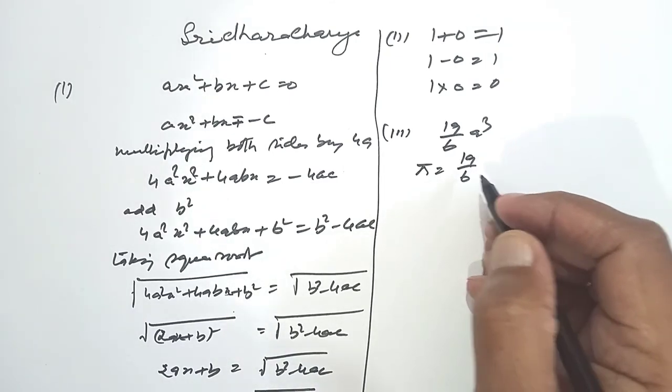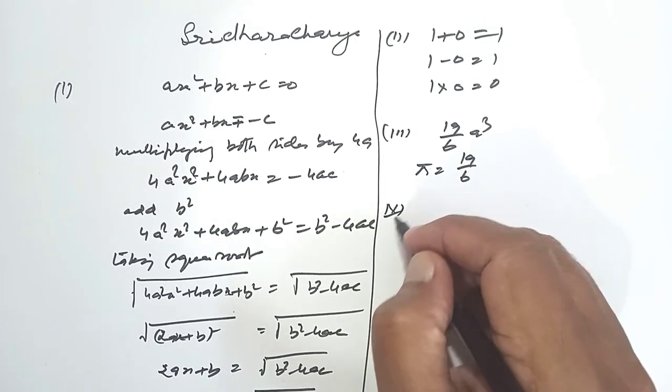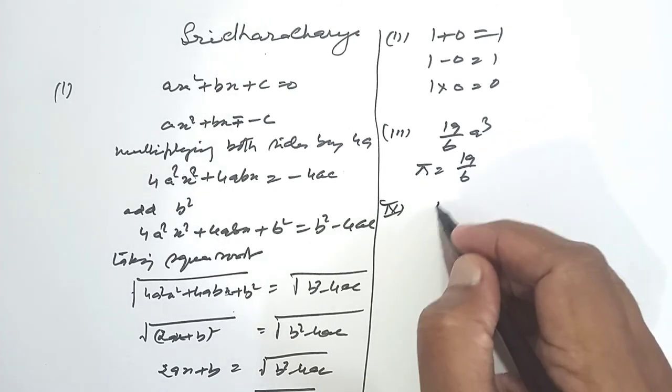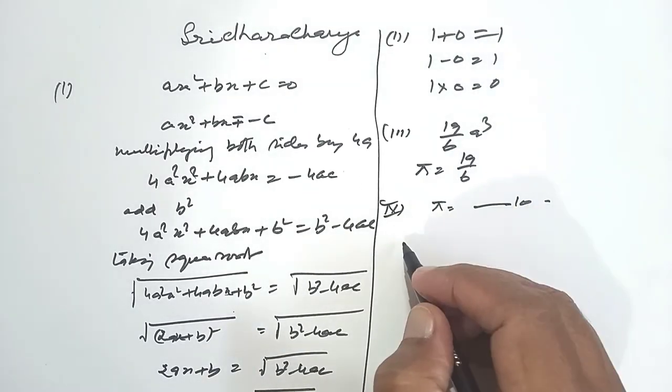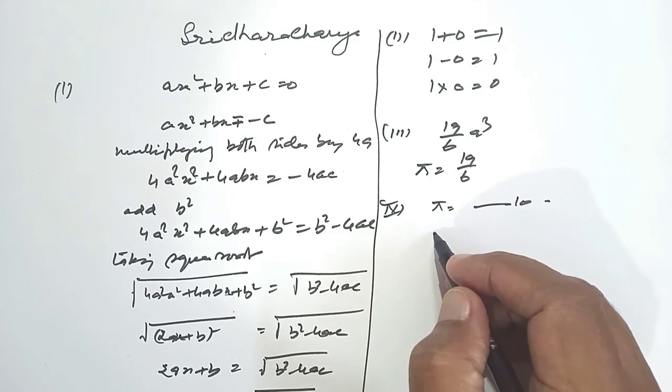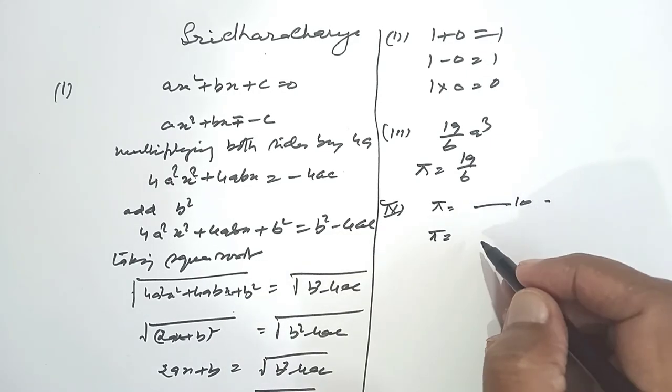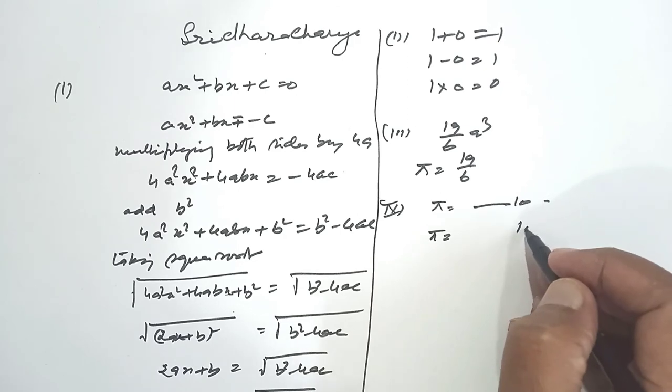In fact, Aryabhata gave us the value of pi up to 10 digits, and he gave us the value of pi up to 18 digits.